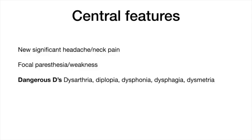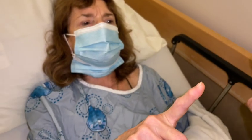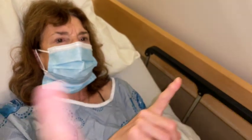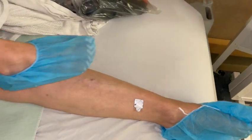The next step is to screen the patient for central features which would not be seen in vestibular neuritis, such as new significant headache or new neck pain, which would be concerning for cerebral hemorrhage or vertebral artery dissection, and typical stroke symptoms such as focal paresthesias or weakness, and then the posterior circulation symptoms — the so-called dangerous D's: dysarthria, diplopia, dysphonia, dysphagia, and dysmetria. Here's her arm examination for any dysmetria, such as past pointing or other ataxic movements.